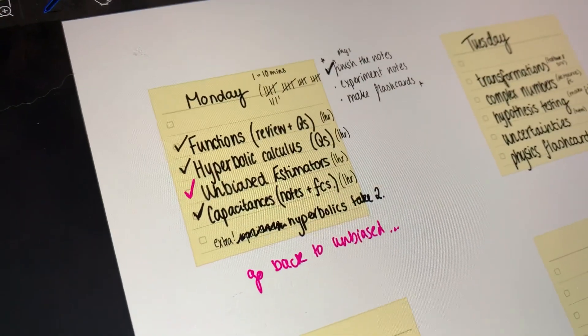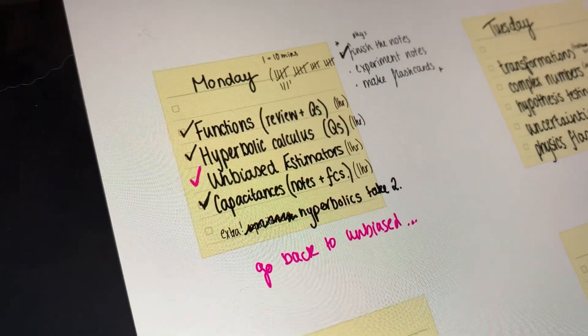It's just gone half nine, I've finished my breakfast and I've made my to-do list. There's yesterday's with some things left over, but here is today's. I'm trying to choose what to start with because these are all topics that I don't like. Tuesday just became the day of my plan where I put every topic I'm not a fan of.